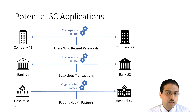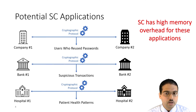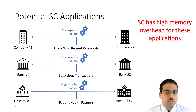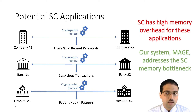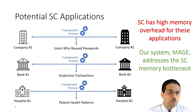Secure computation in theory is applicable to these use cases, but in practice its memory overhead can be prohibitive. These applications are particularly challenging because the parties have large amounts of input data which must be computed on with high memory overhead. The system I'll tell you about today addresses this memory bottleneck, allowing secure computations to scale well beyond the available memory on the system. Using our system MAGE, we were able to scale the password reuse detection application to 100 million records per party.